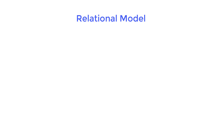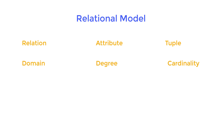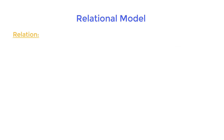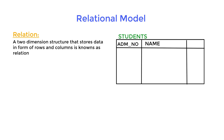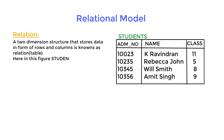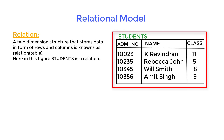In this topic we will learn relation, attribute, tuple, domain, degree, and cardinality. So what is relation? A two-dimensional structure that stores data in the form of rows and columns is known as a relation or a table. Here in this figure, student is a relation.